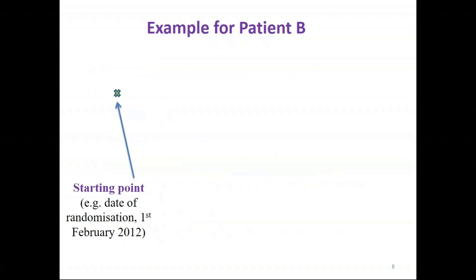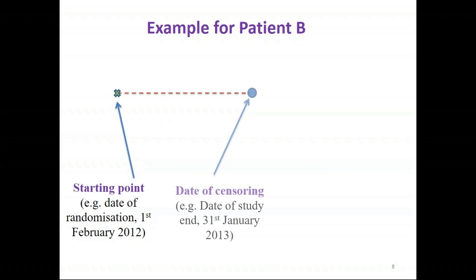Here's an example for patient B. They're randomised into a trial on the 1st of February 2012, followed up during the trial, and the study ends on the 31st of January 2013, but patient B hasn't yet experienced the event of interest. So the date of censoring for this patient would be the 31st of January 2013.